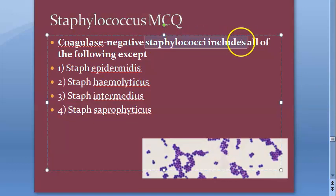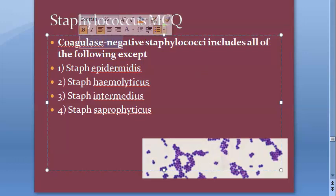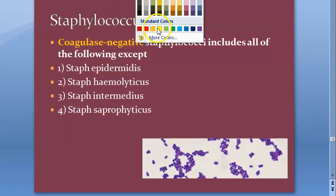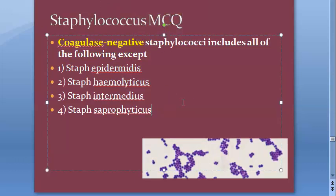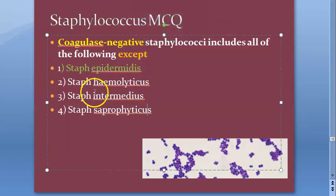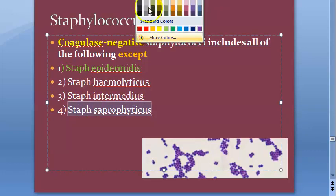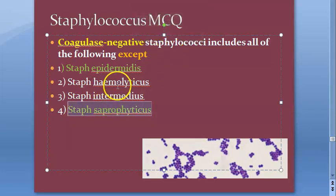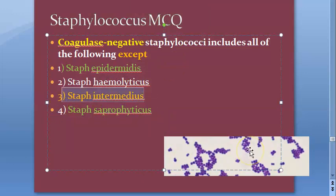Coagulase negative staphylococci includes all of the following except. Epidermidis is coagulase negative. Saprophyticus is also coagulase negative. Intermedius is actually coagulase positive — just like staphylococcus aureus. Hemolyticus is also coagulase negative.